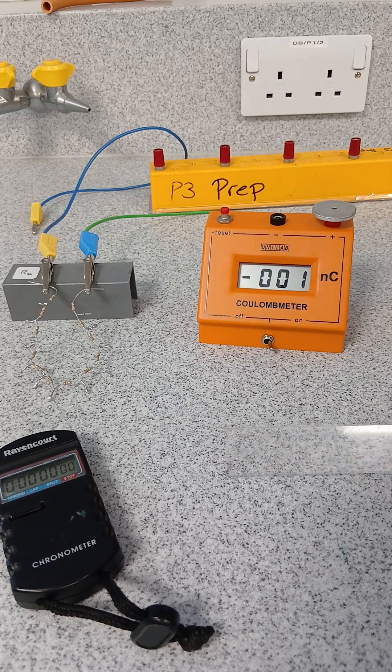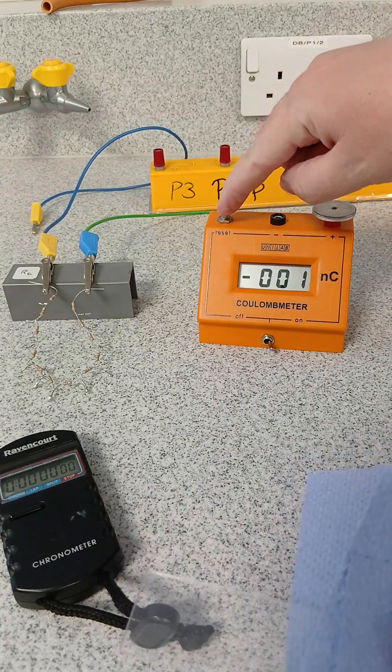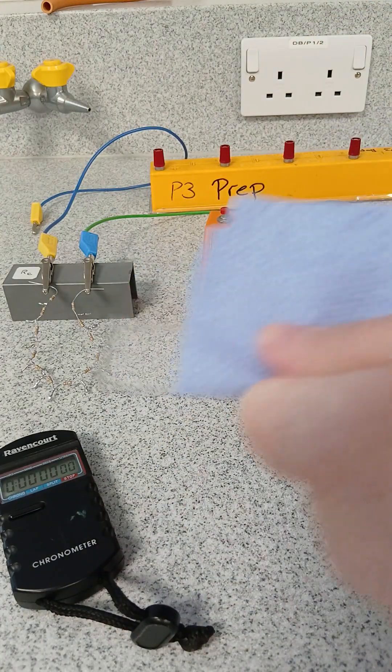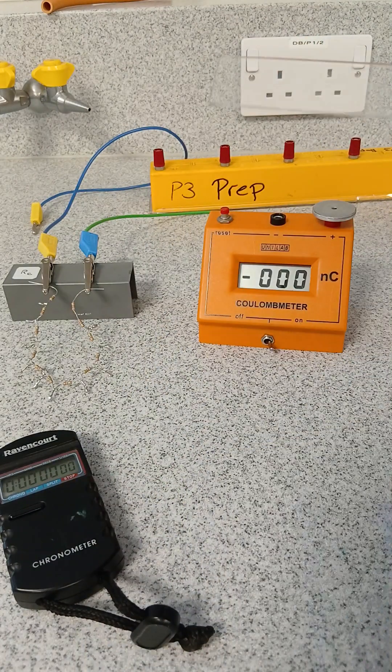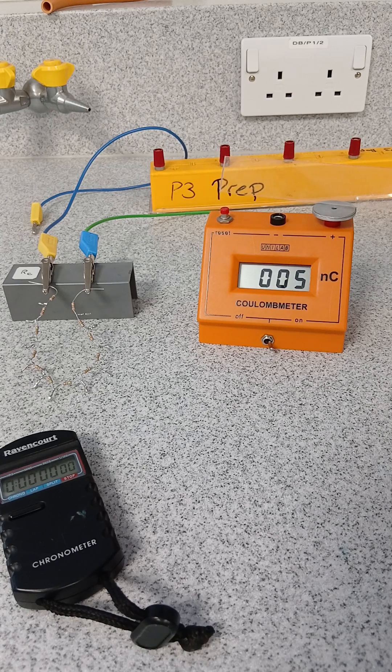And then if I take the cloth and rub this acetate rod, maybe reset this, rub the acetate rod. Now you've got a positive charge building up there.